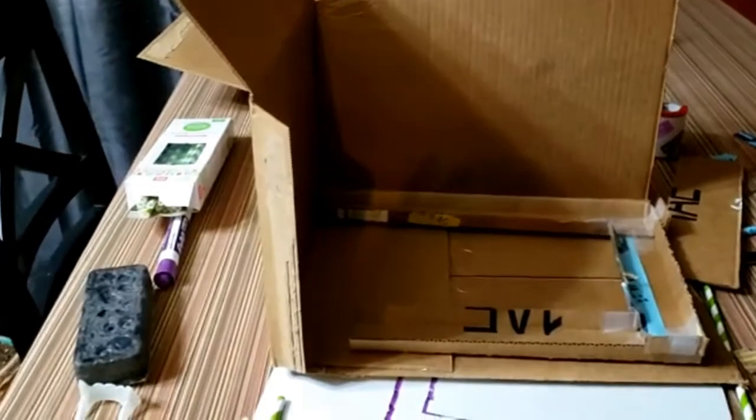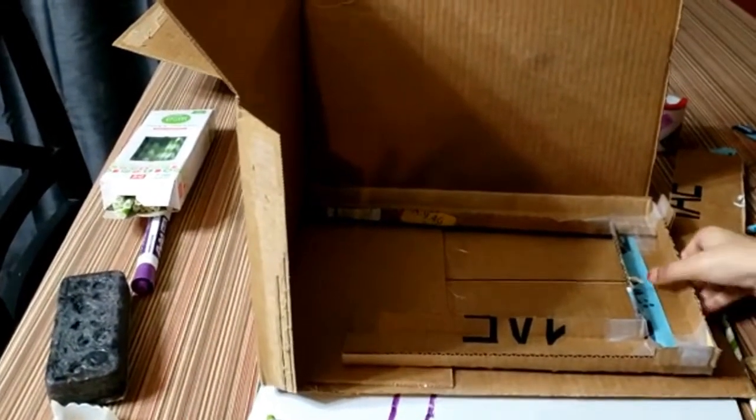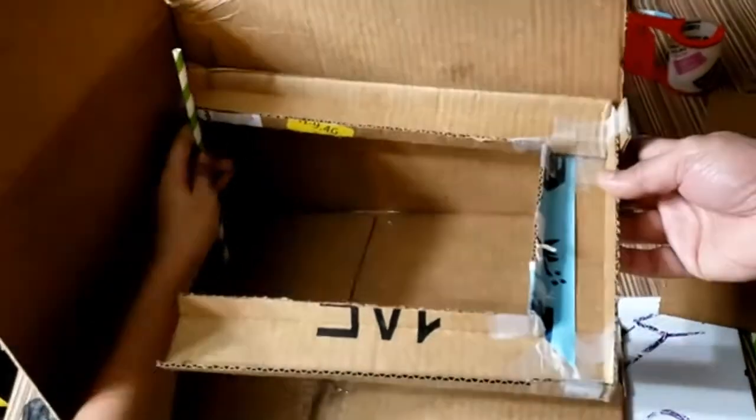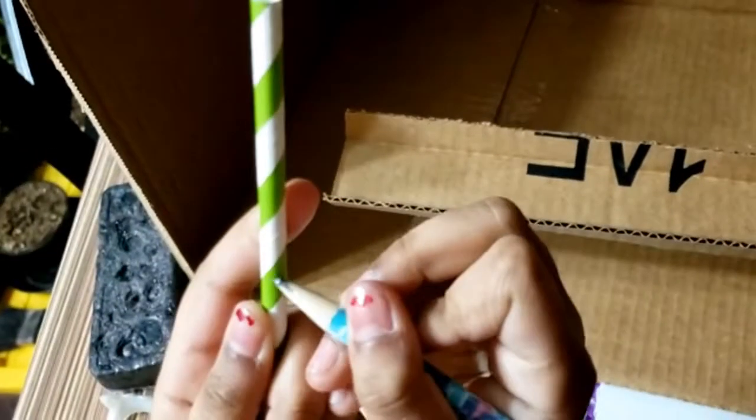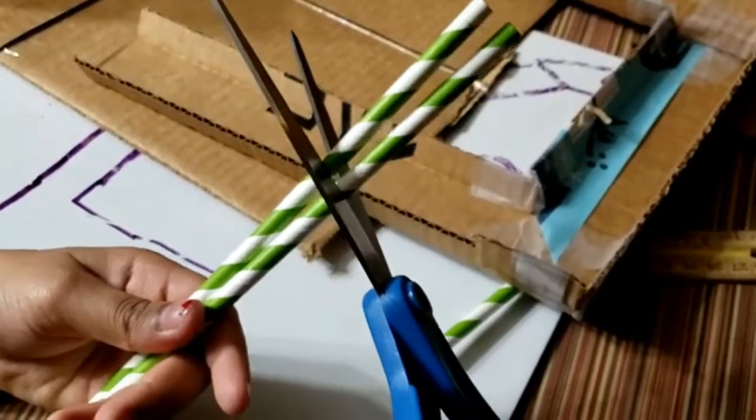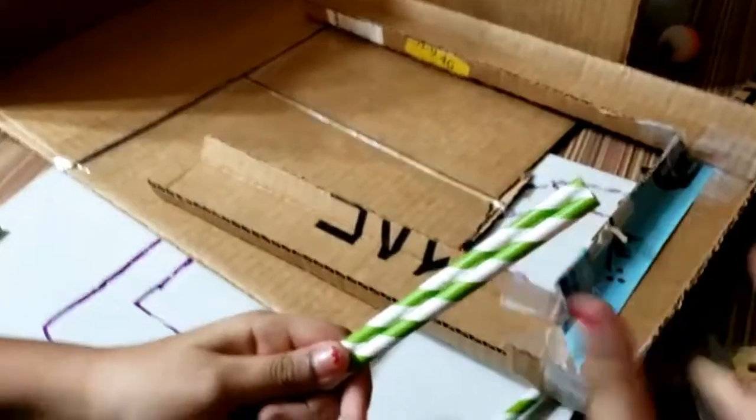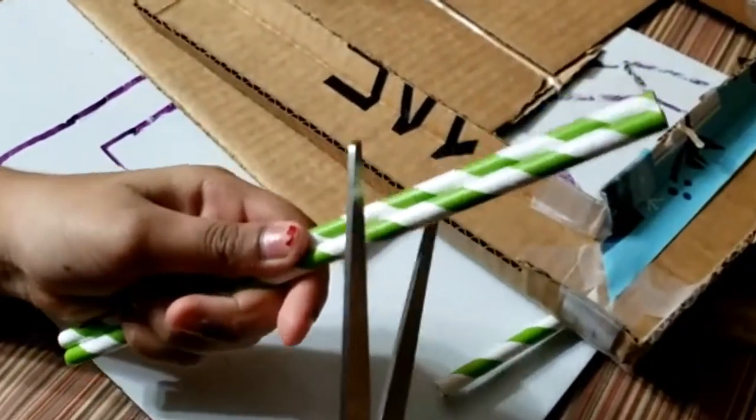The next step is to have a friend hold your ramp up while you put the straws in and measure how much that needs to be cut. So now we are going to cut the straws. So I'm going to put two straws and cut both of them at the same spot.